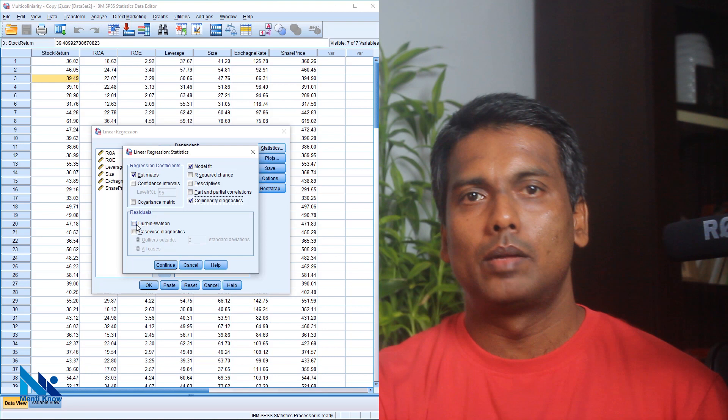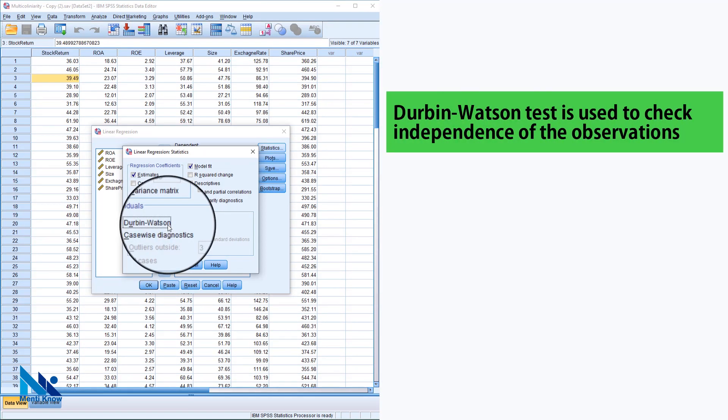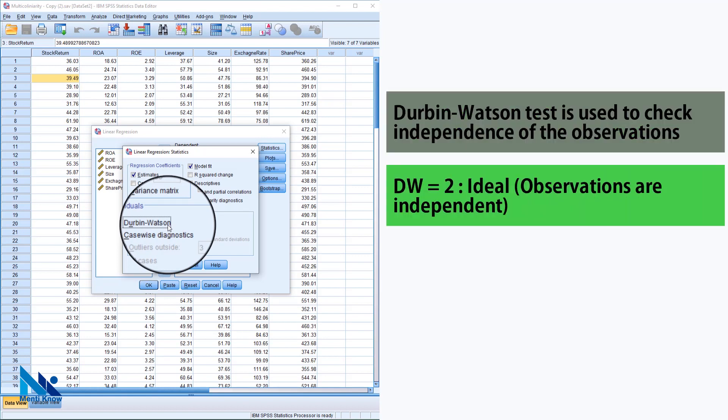Further, I will select Durbin and Watson test as well. Durbin and Watson test is used to test for independence assumption. In an ideal situation, the Durbin and Watson test statistic should be approximately 2. If the Durbin and Watson statistic is less than 1.5 or greater than 2.5, the independence assumption is violated.